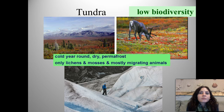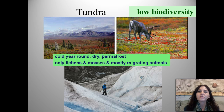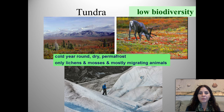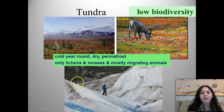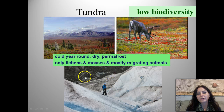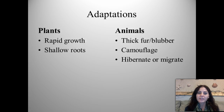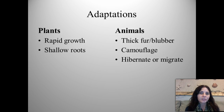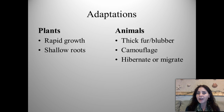The tundra is characterized by low biodiversity. It's cold year-round, dry, and has a layer of permafrost. You'll mostly find lichens, mosses, and low shrubbery, with mostly migrating animals such as reindeer. Plant adaptations include very rapid growth during a small window of time, and shallow roots because they can't penetrate permafrost. Animal adaptations include thick fur or blubber, camouflage, and hibernation or migration.